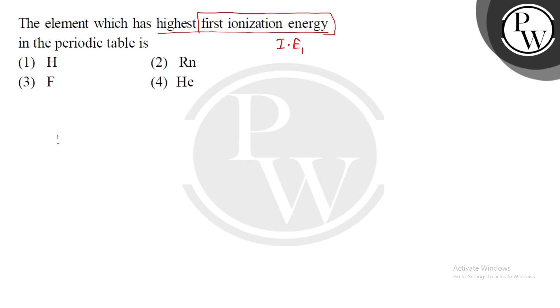Here you can see the elements given: hydrogen, radon, helium, and fluorine. Radon and helium are the noble gases.